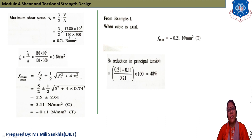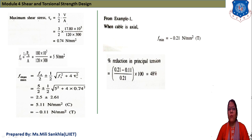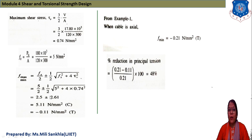Maximum shear stress: tau_v_max = (3/2) × V/A = 1.5 × (17.8 × 10³) / (120 × 300) = 0.74 N/mm². The actual prestress in horizontal direction: f_x = P_H/A = (180 × 10³) / (36 × 10³) = 5 N/mm². Applying the principal stress formula: f = 5/2 ± (1/2)√(5² + 4 × 0.74²).